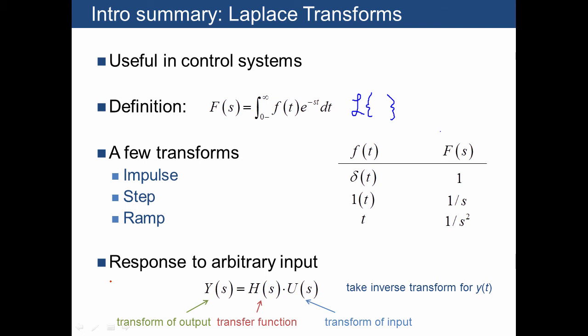And then we said that the response to an arbitrary input u of t can be computed by just multiplying the transfer function of the system by the transform of the input to yield the transform of the output. And then you just take the inverse Laplace transform of that in order to find y of t.